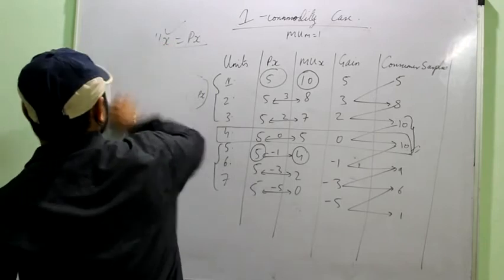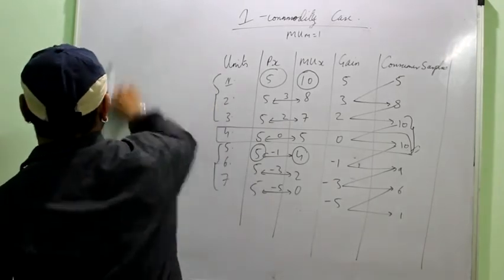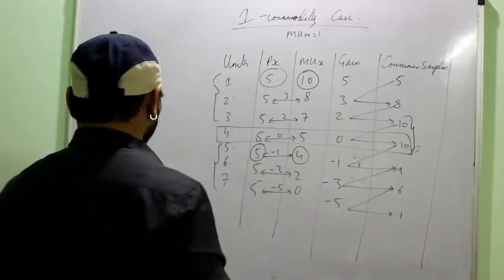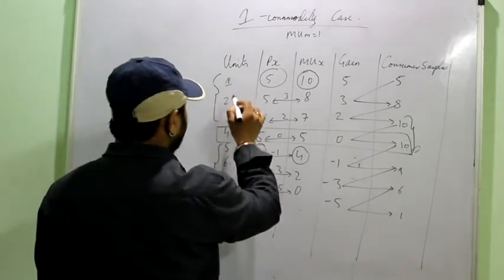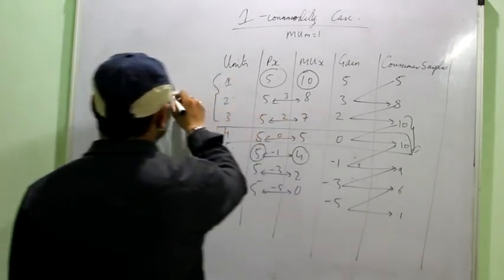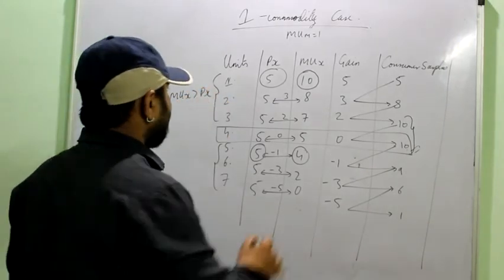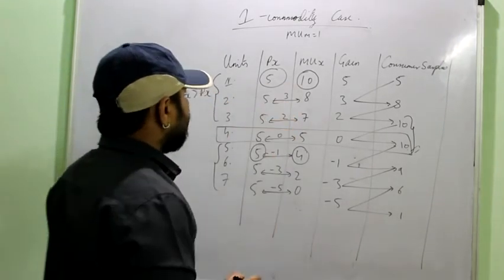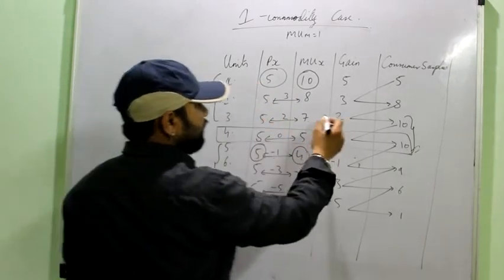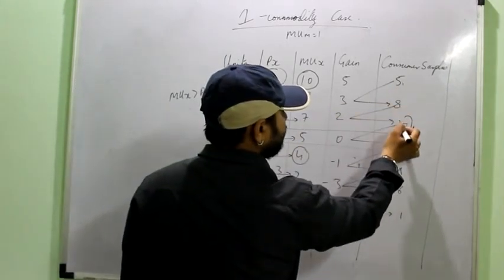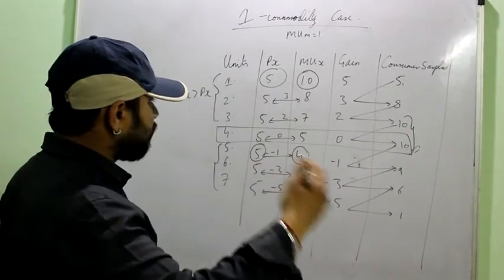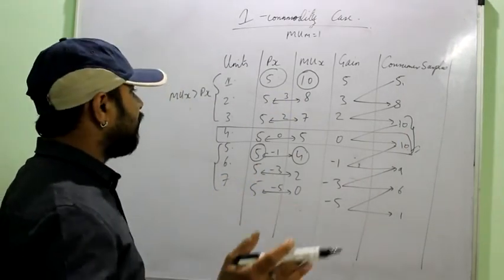Now, in the numerical, we will study how these conditions are explained. You can observe that at units 1, 2 and 3, MUx is greater than Px. For all the three goods. So, all the three units, you can see they all are increasing the surplus. So, when there is a chance to increase the surplus, that particular...